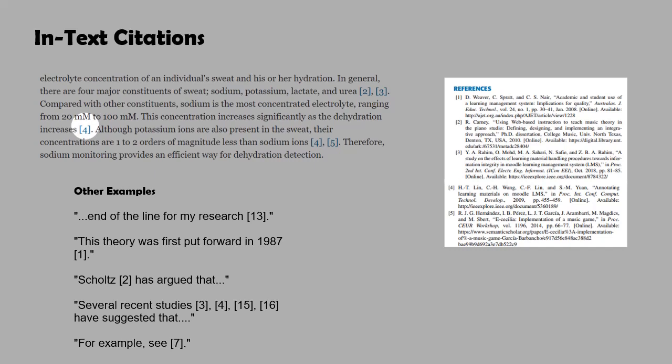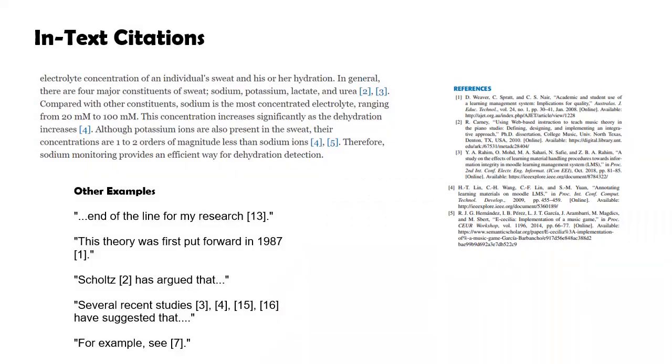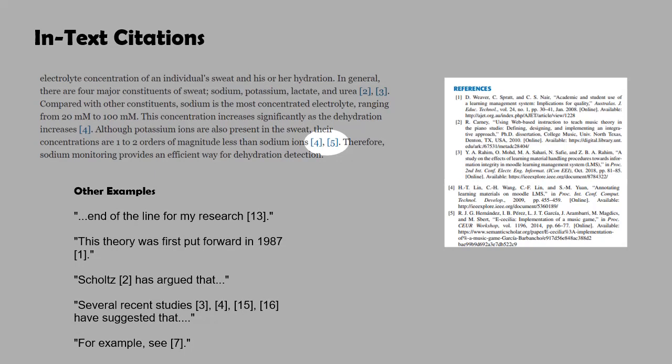Place bracketed citations within the line of text before any punctuation with a space before the first bracket. Number your sources as you cite them in your paper. Once you have referred to a source and given it a number, continue to use that number as you cite that source throughout the paper.